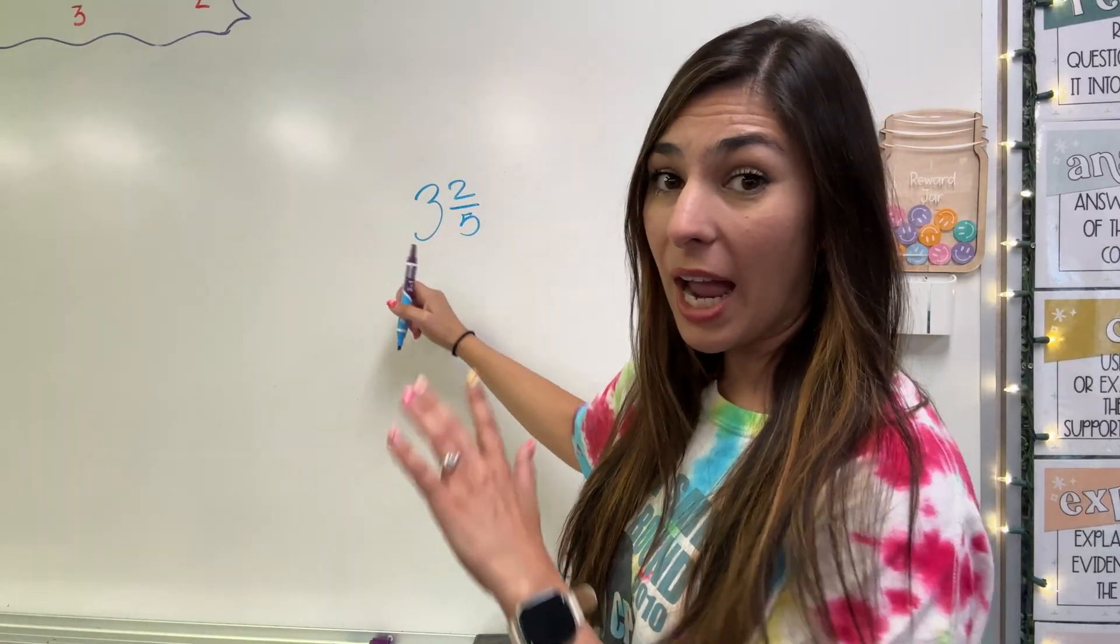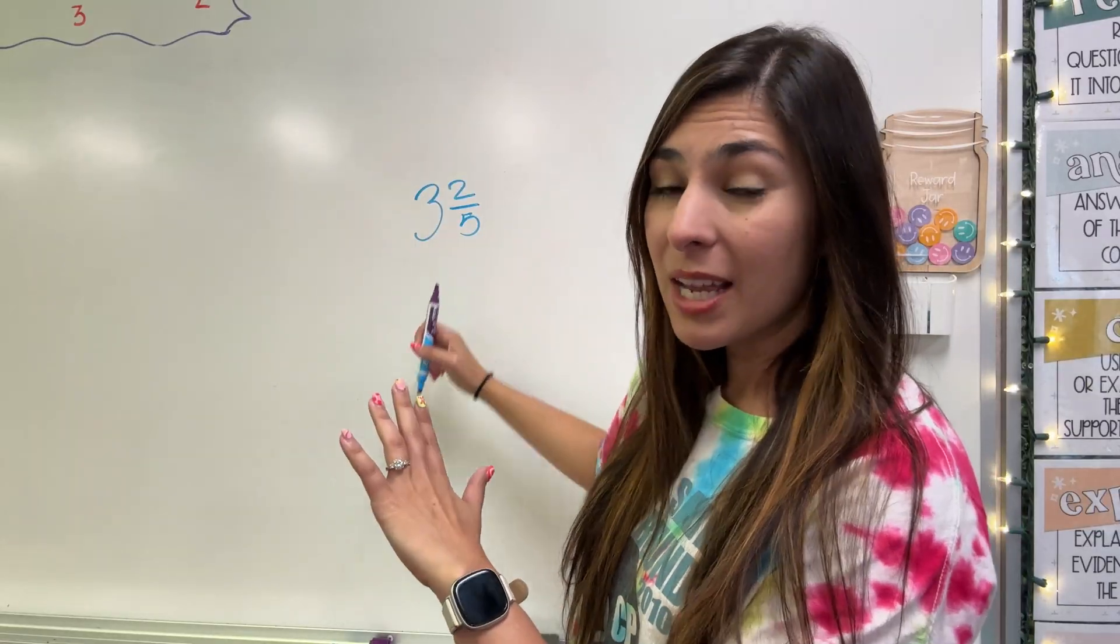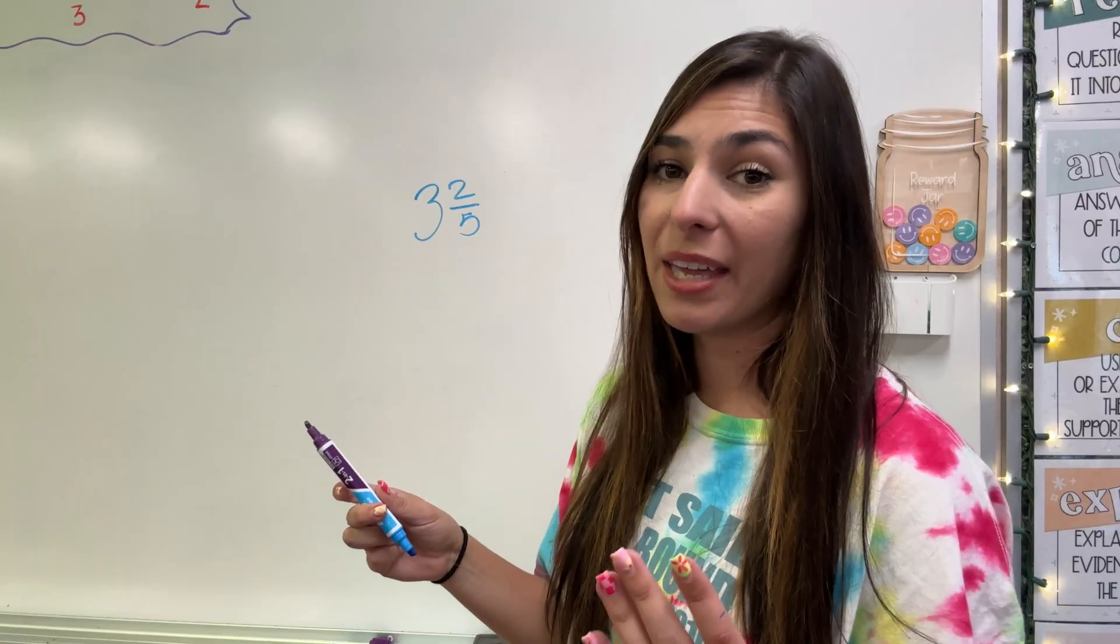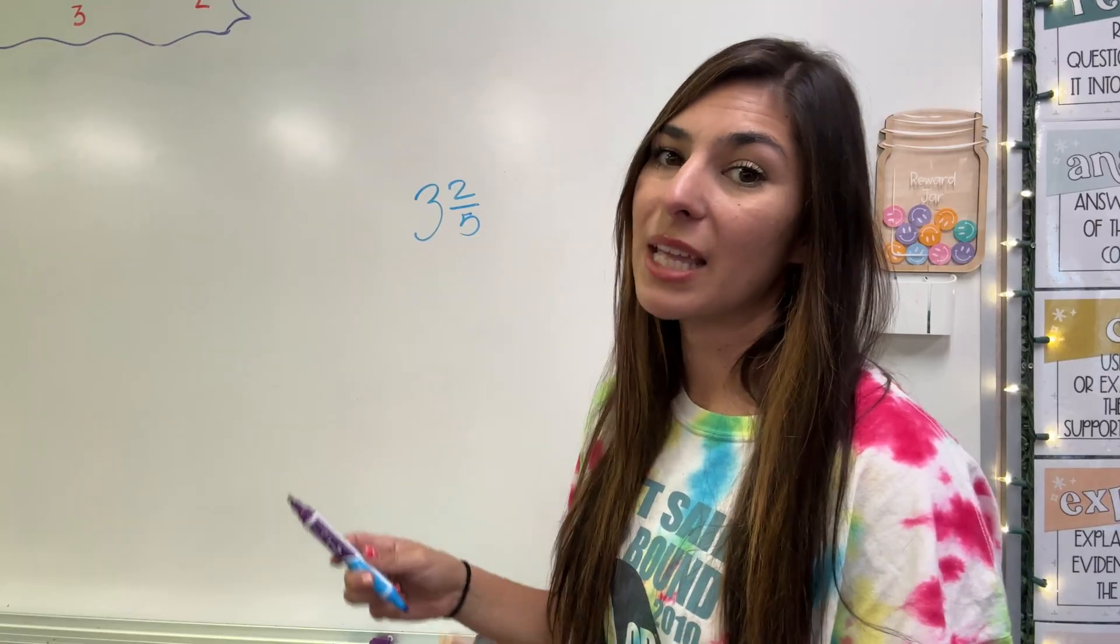This is a mixed number. I have a whole number attached to a fraction. Now, when we're multiplying and dividing fractions, it is not going to work having a mixed number. I need to turn that into an improper fraction.